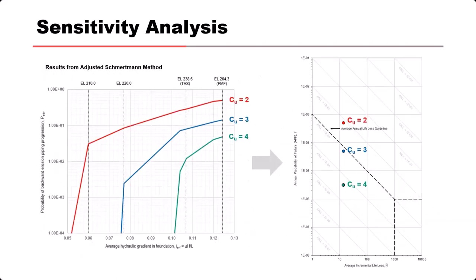Here's an example of a sensitivity analysis used to make the case for further investigation. The plot shows hydraulic gradient versus probability of backward erosion piping progression, which is very sensitive to the uniformity of continuous sand in the foundation. With a coefficient of uniformity of two, the risk is almost an order of magnitude above the average annual life loss guideline; at four, it plots more than an order below it. If we don't have enough gradation data to know what's present in our foundation, it's best to recommend sampling and analysis to get better gradation data.